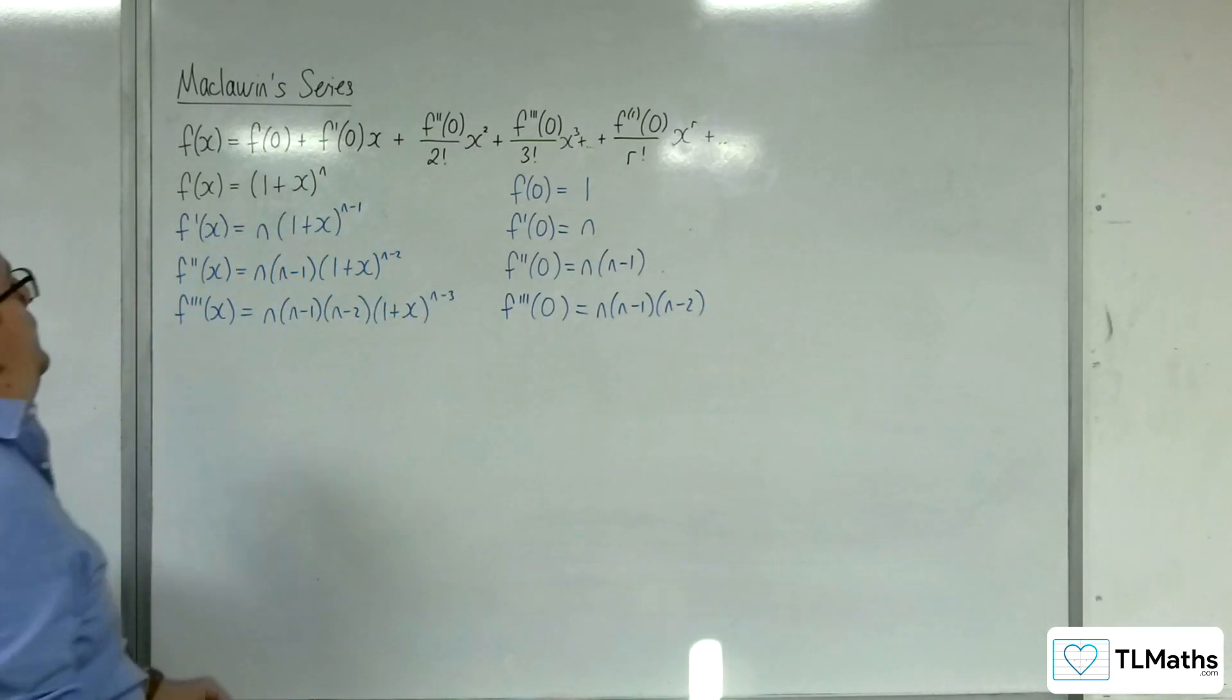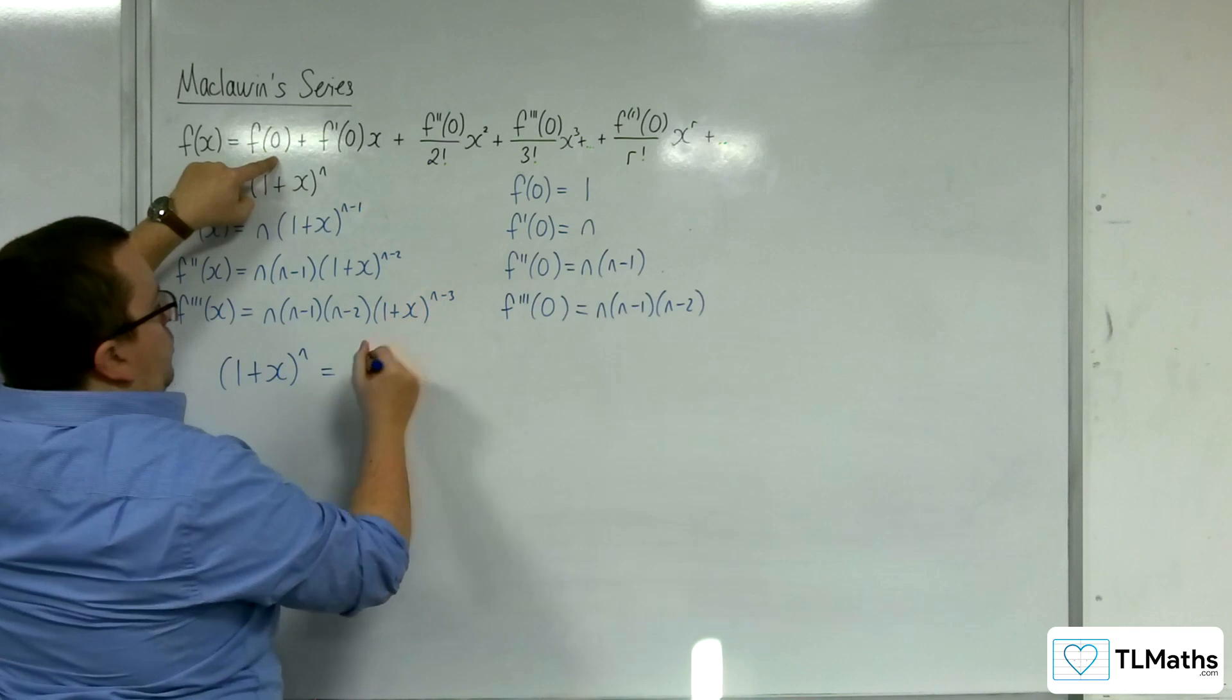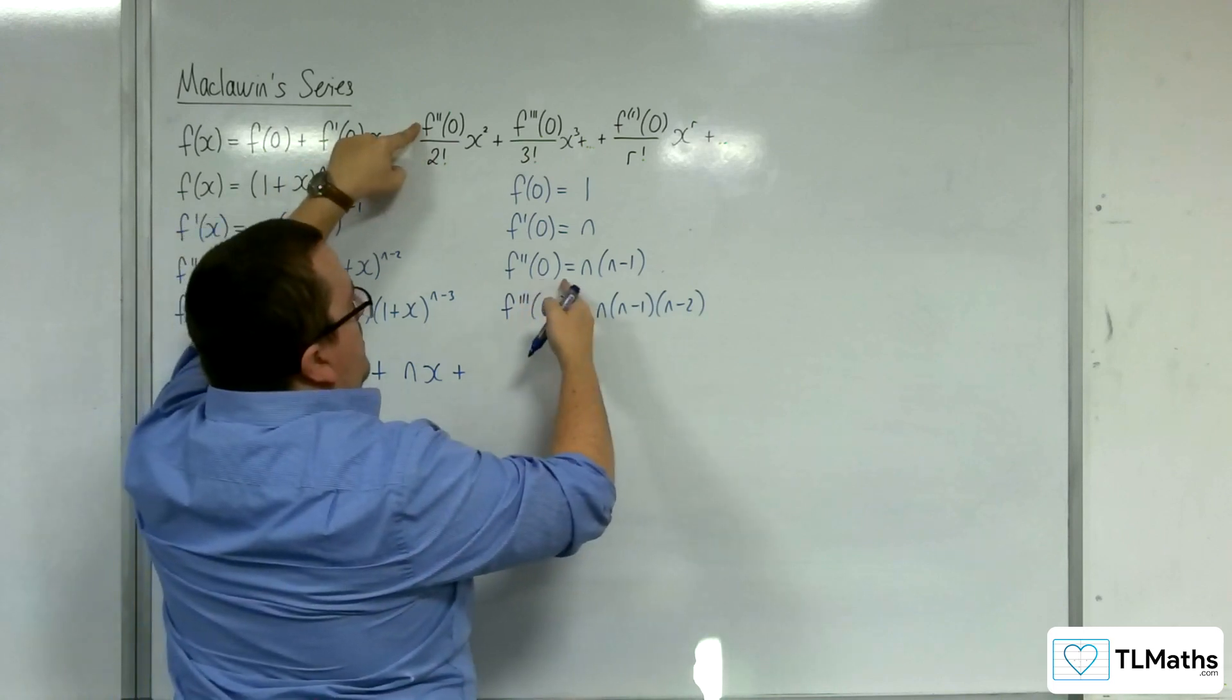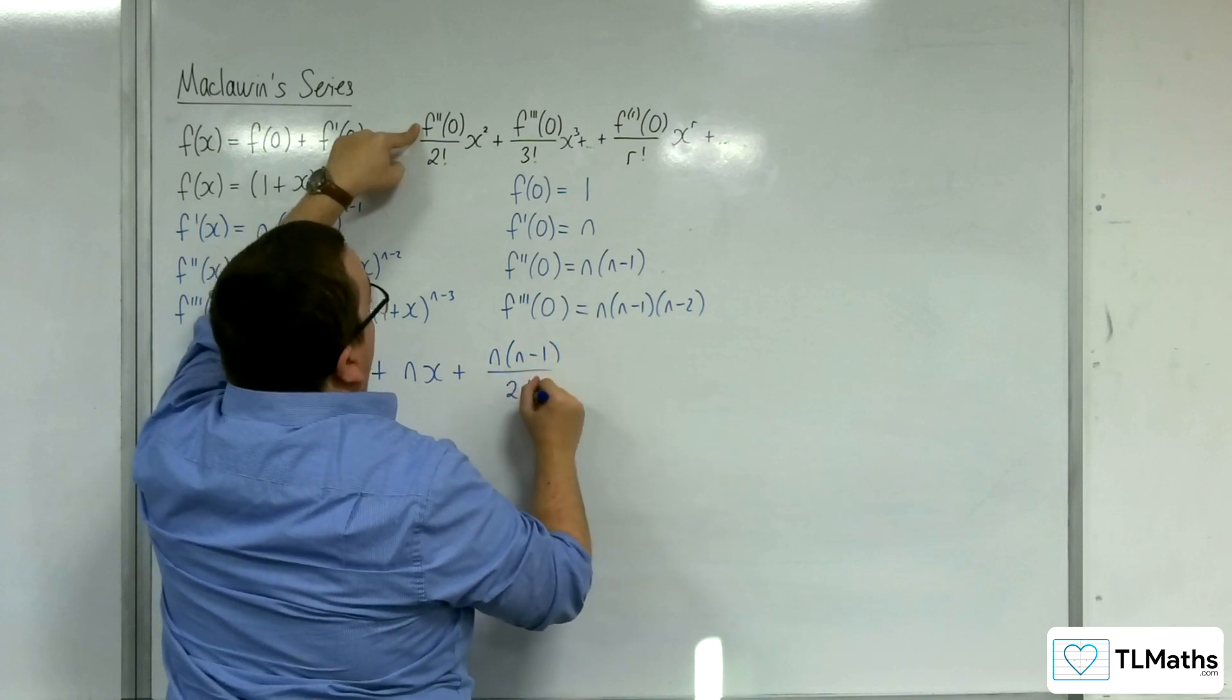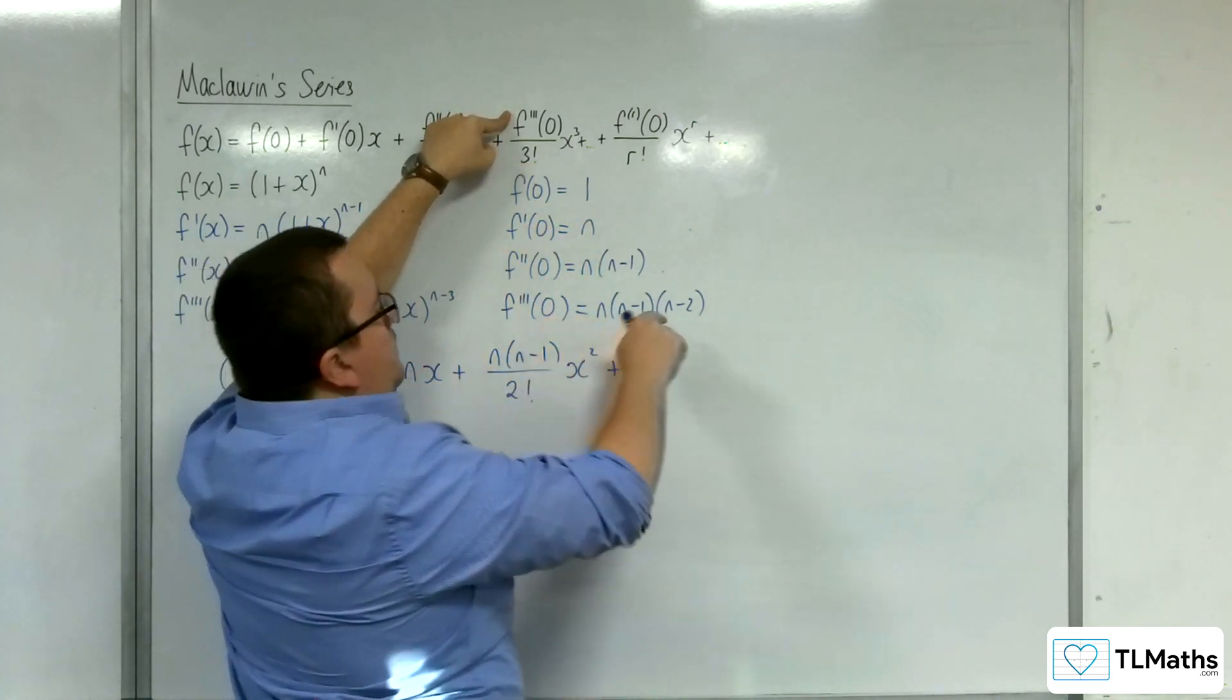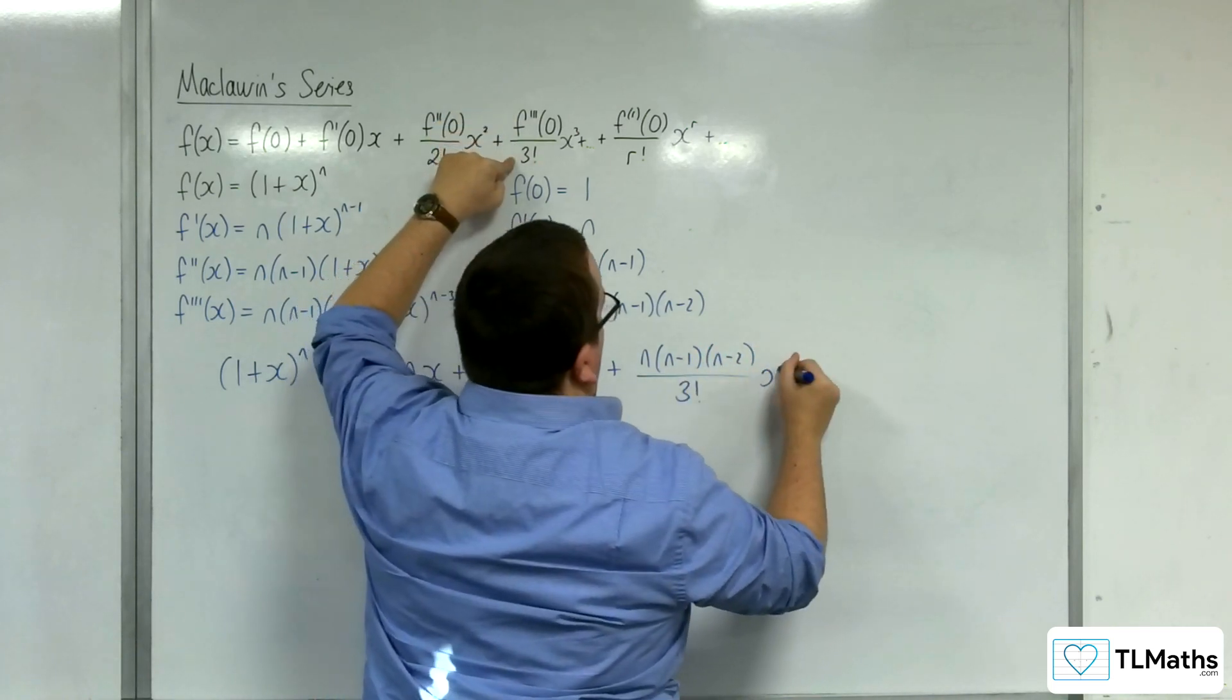That means that 1 plus x to the n is going to be equal to f of 0, which is 1, plus f prime of 0 times x, so nx, plus f double prime of 0, which is n times n minus 1 over 2 factorial x squared, plus f triple prime of 0, which is n times n minus 1 times n minus 2 over 3 factorial x cubed.